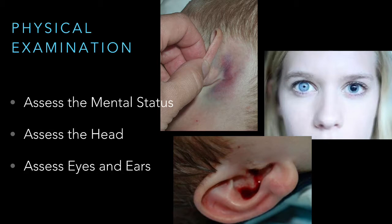In relation to the three physical examination components that would assist in identifying the level of severity, the first assessment would surround the child's level of responsiveness by utilizing the pediatric Glasgow Coma Scale, which focuses on eye-opening, verbal response, and motor response. If the child's level of responsiveness is decreased, this would lean towards concussive or increased endocranial pressures within the cranial vault.